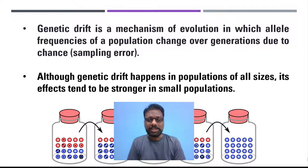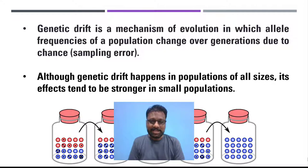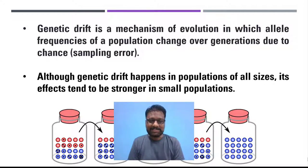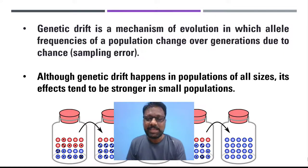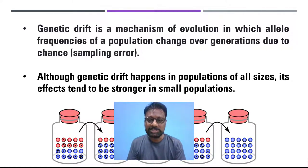Although genetic drift operates in most populations, its effect tends to be very clear and stronger in those populations where the size is very small. By chance — not by adaptation — it operates in smaller as well as larger populations, but its effect is more pronounced on smaller populations.